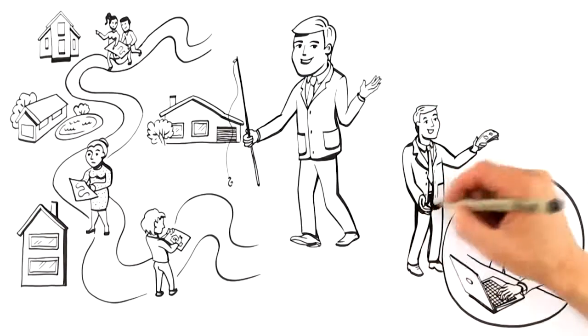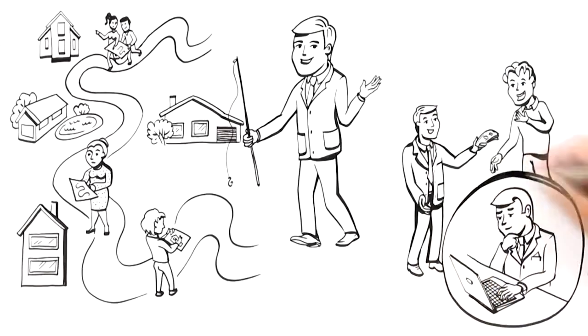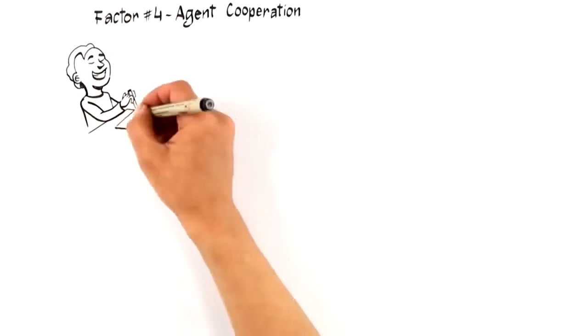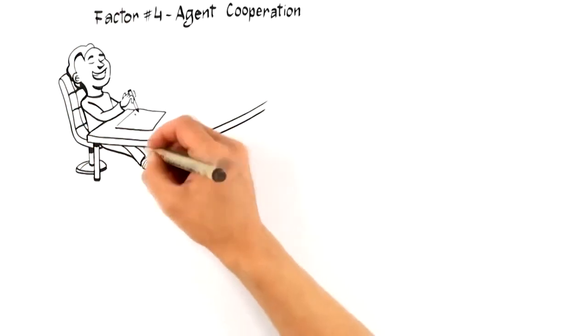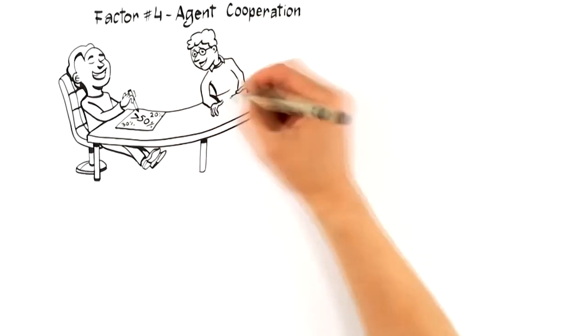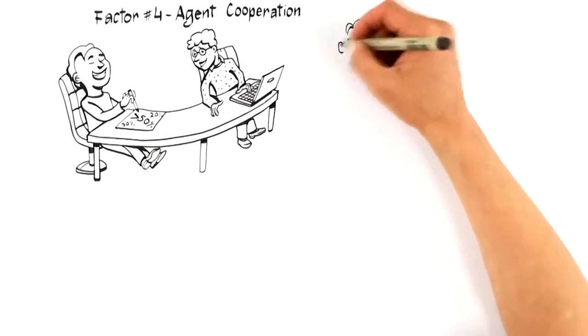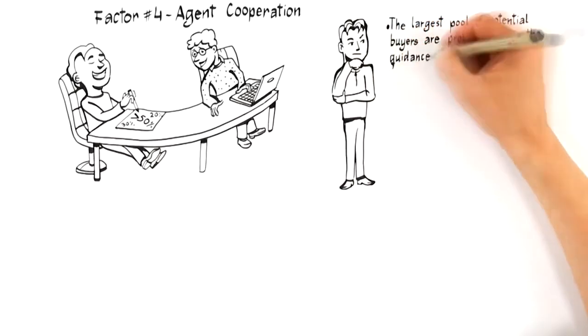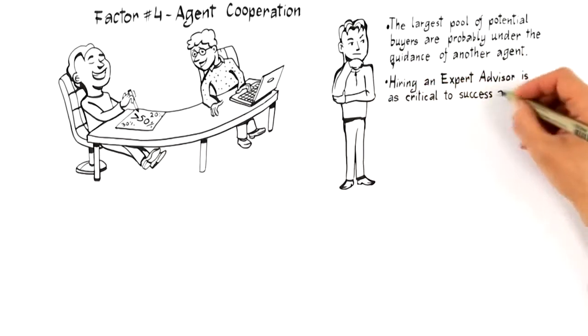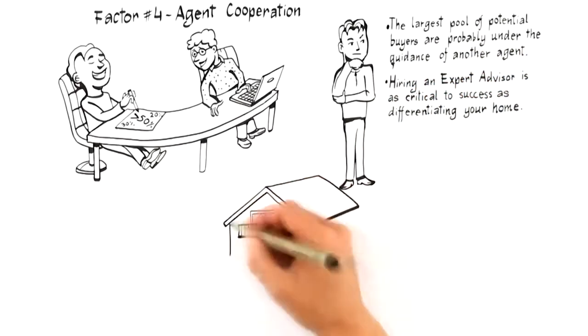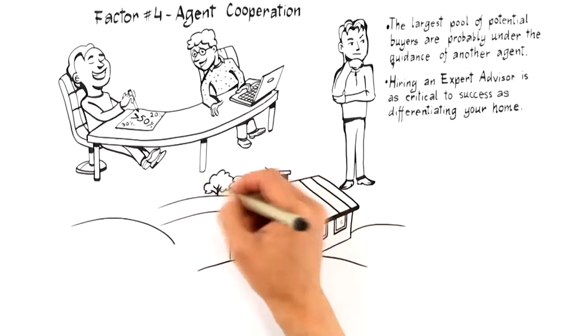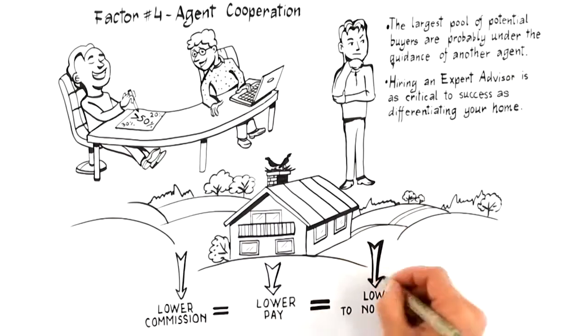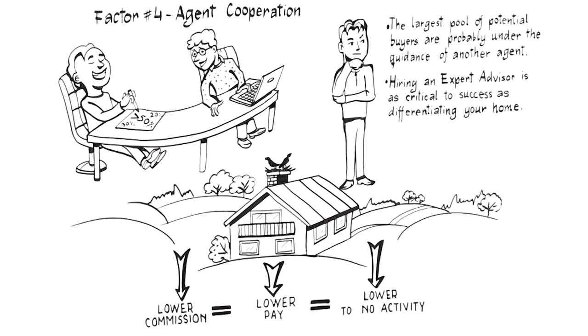Now, a widely known but little discussed selling factor that significantly increases the likelihood of you getting a top dollar offer is factor number four, agent cooperation. Agent cooperation simply predicts that there is a greater than 50% chance that once your home is exposed to the market, another real estate professional will bring you a buyer. Since the largest pool of potential buyers are probably under the guidance of another agent, it's critical that your expert advisor allocate a portion of their marketing budget to get your home in front of the top agents in the market who represent buyers. This means hiring an expert advisor who understands the current incentives that motivate other agents to bring their best clients is as critical to success as differentiating your home is to attract targeted buyers. Be wary of the agent that offers to accept lower commission. Often this leads to a lower compensation being offered to the agents that potentially have a buyer for your home, resulting in little to no activity on your house.